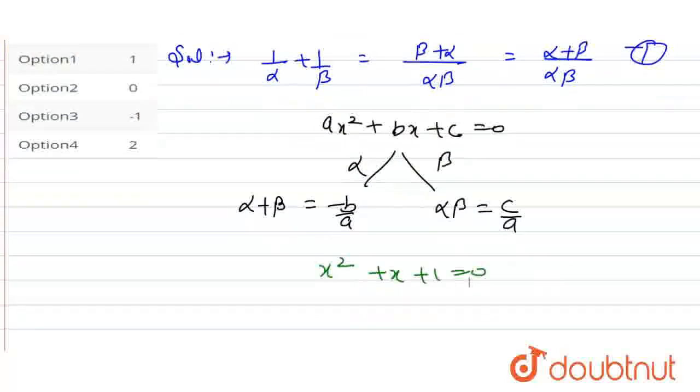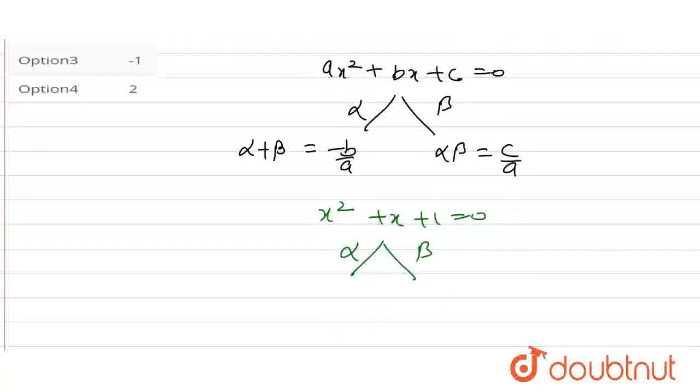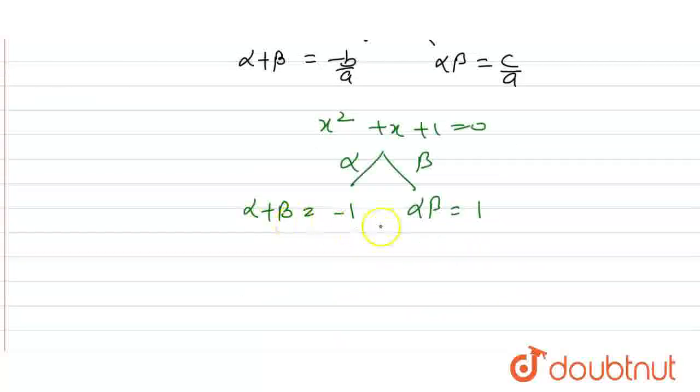That is the constant coefficient. So that is alpha plus beta and alpha beta. This is the value for equation 1.